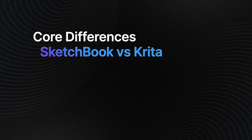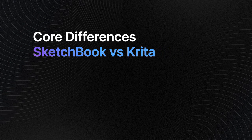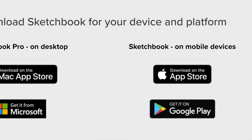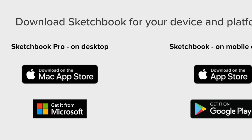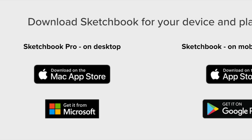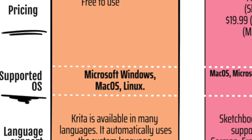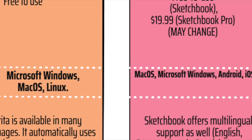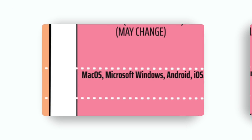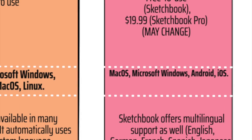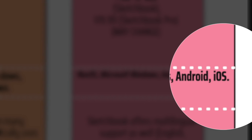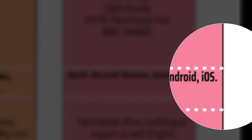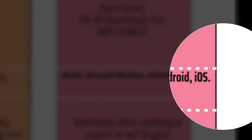Core differences between Krita and Sketchbook: although both apps can be used on Windows and Mac devices, neither supports all operating systems. Krita can also be used on Linux computers. On the other hand, Sketchbook is the only app between the two that supports iOS and Android devices. Therefore, Sketchbook is the best choice if you want to create digital art on tablets or smartphones.